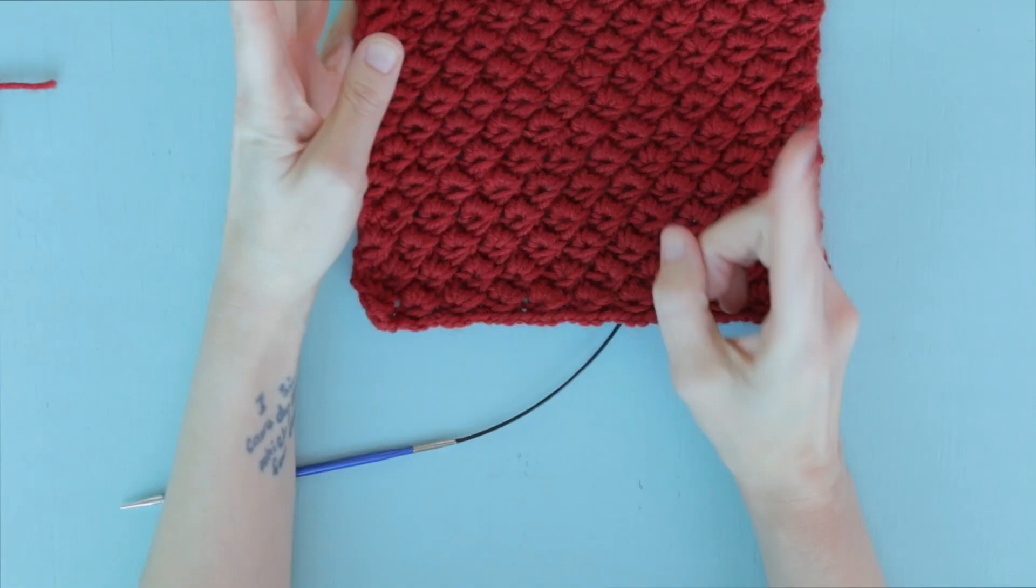So let me show you rows three and four of this ultimately pretty easy stitch once you get the hang of the knit four, purl four together action.